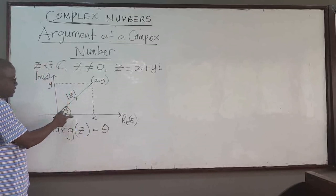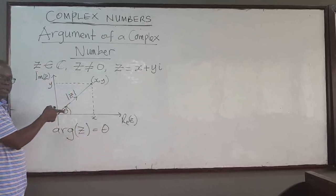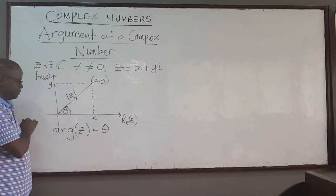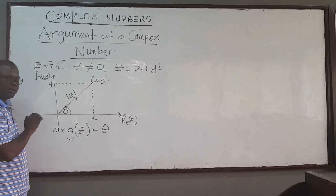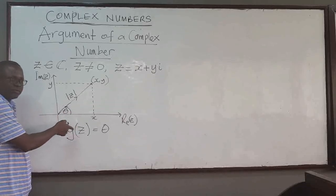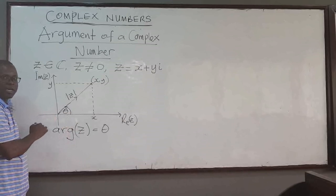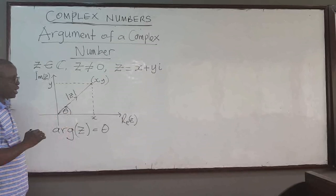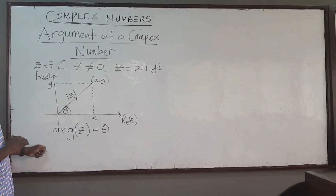If theta is measured from the real axis in the anti-clockwise direction, then it is a positive angle. If you are measuring in the clockwise direction, it is a negative angle, as we name for polar coordinates — it's very similar to this. So that is referred to as the argument of z.